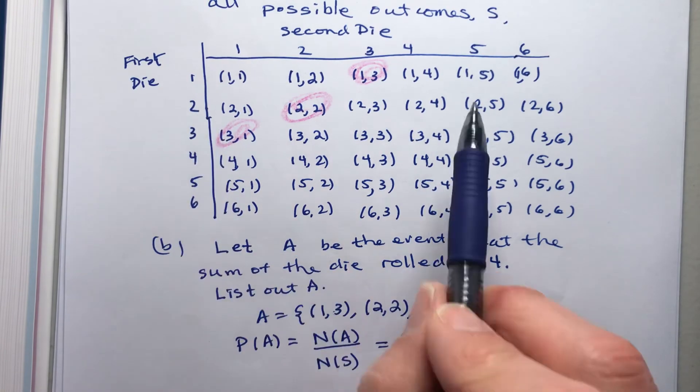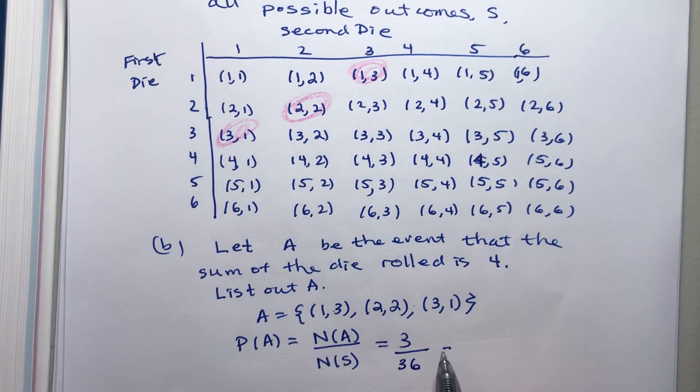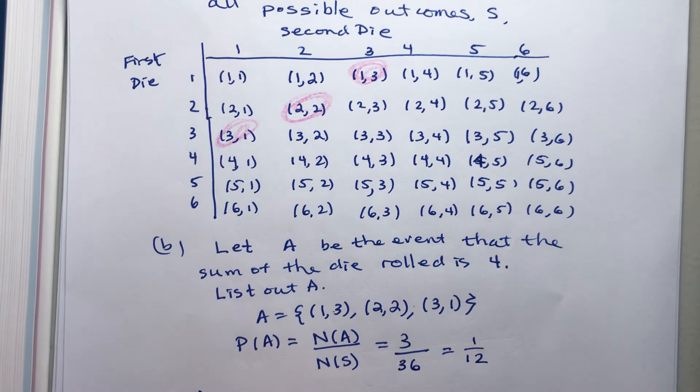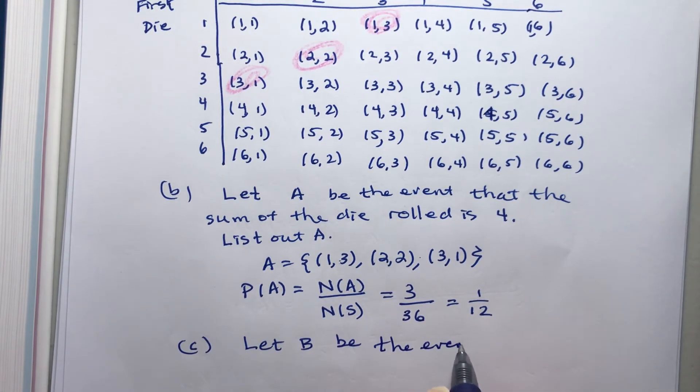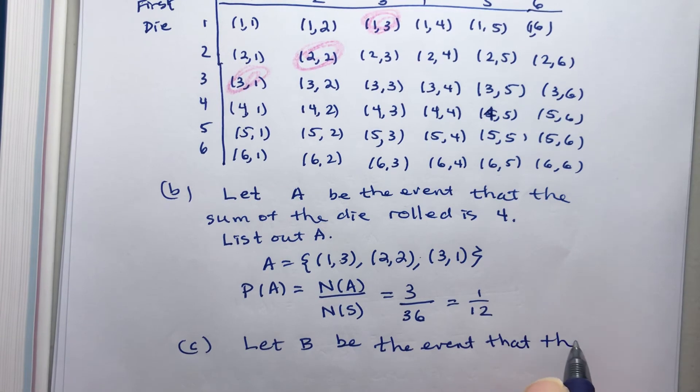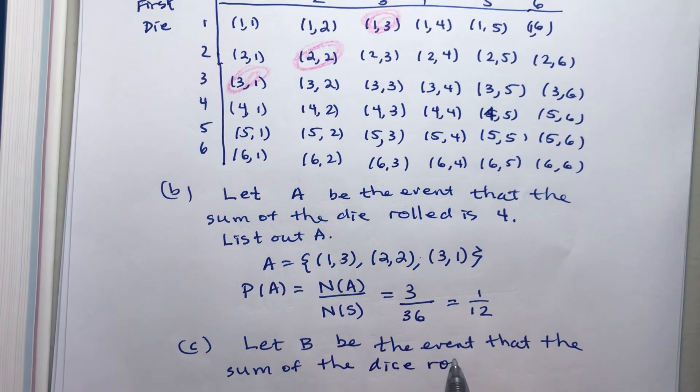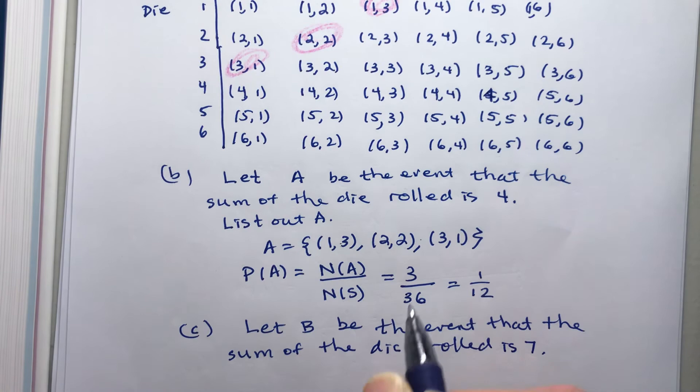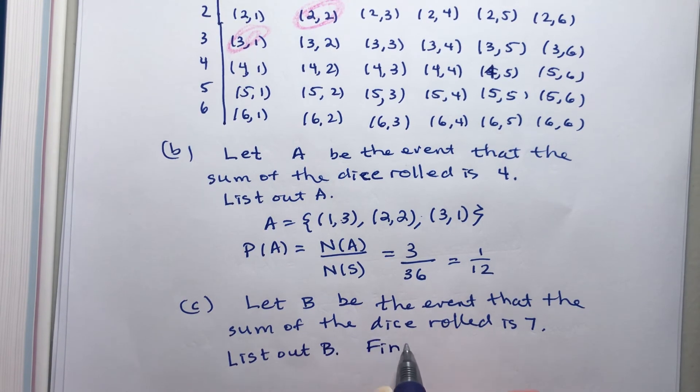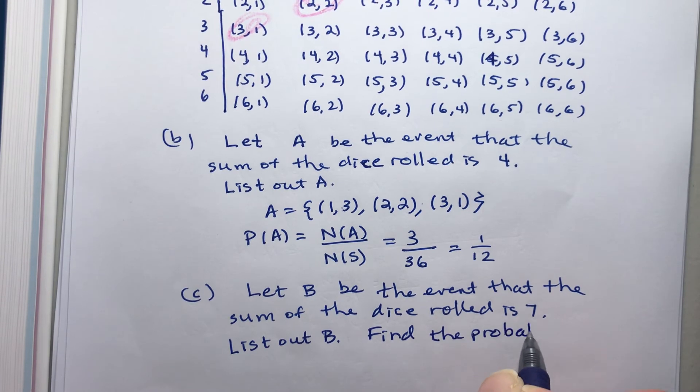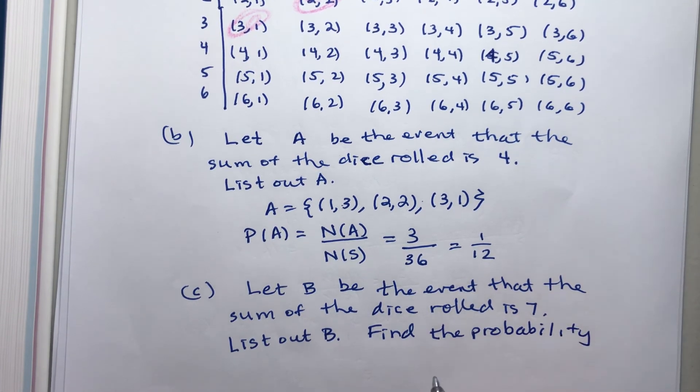But look, there's a total of six times six possible outcomes. That makes 36. That reduces to 1/12. Let B be the event that the sum of the dice rolled is seven. This is supposed to be dice up there. So first of all, we'll list out B and then we'll find the probability of B.